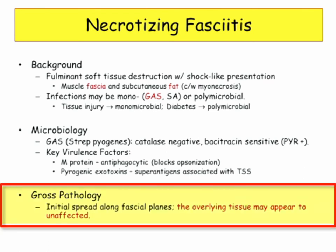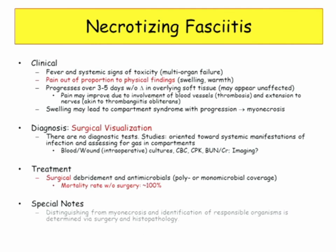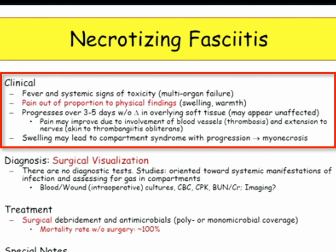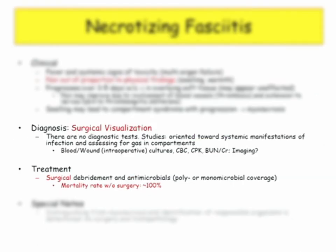The horrible part: the overlying tissue can appear normal. Patients come in with horrible pain and signs of toxicity, but externally it looks benign — they may be mistaken for drug-seekers. They're not: this is deep. These people are genuinely sick. Pain out of proportion to physical findings is the hallmark — maybe some swelling and warmth, progressing over a short time without involving the overlying soft tissue. It also causes vessel thrombosis, can extend into nerves, causing numbness. As the infection worsens, the pain can paradoxically improve, and compartment syndromes can develop. Surgery is the treatment; there is no specific diagnostic test — you rely on clinical suspicion.